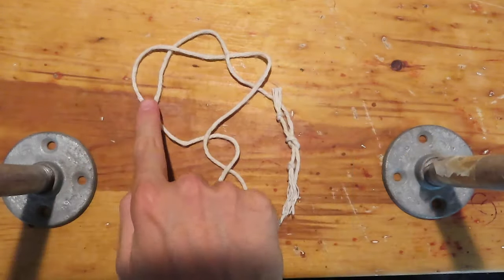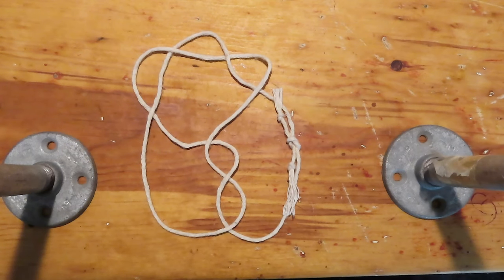See? 1, 2, 3, 4, 5, 6, 7. Seven crossings. And a nice-looking knot at that.